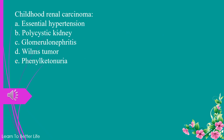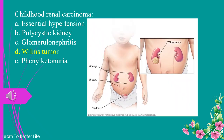Childhood renal carcinoma. a. essential hypertension. b. polycystic kidney. c. glomerulonephritis. d. Wilms tumor. e. phenylketonuria. The answer is d. Wilms tumor.